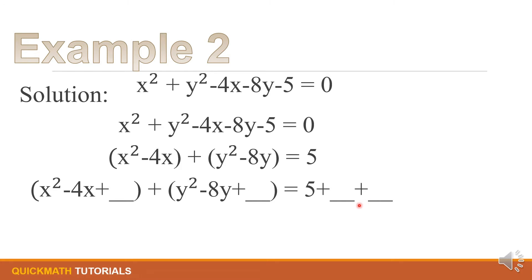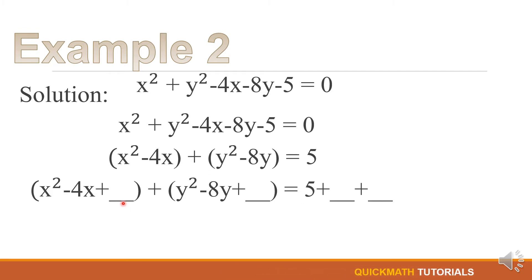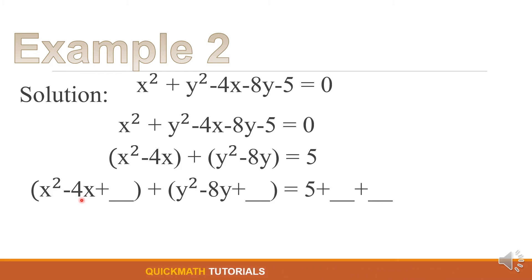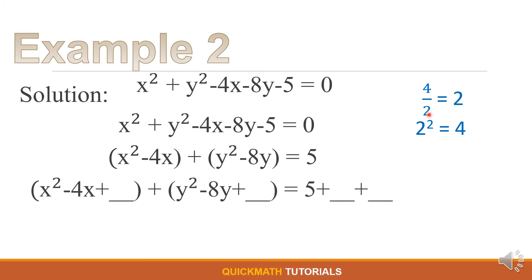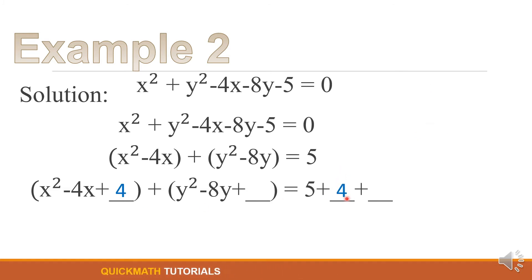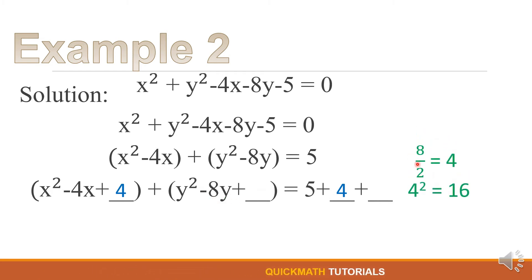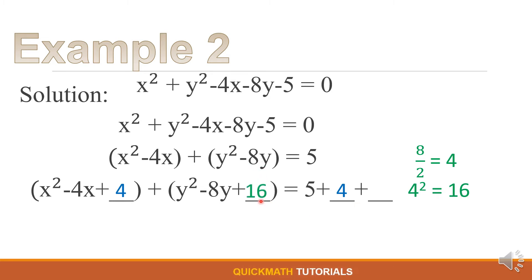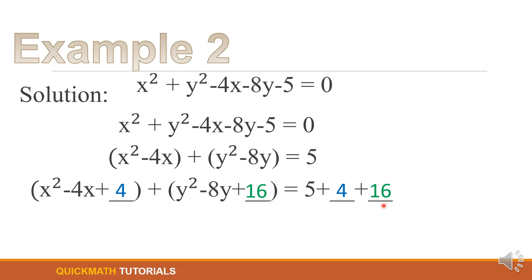This process is what we call completing the square. To find the third term of x, focus on the coefficient of the middle term regardless of the sign. The coefficient of x is 4, so 4 divided by 2 equals 2, and 2 squared equals 4. Therefore we will add 4 on the left and on the right side. For y, focus on the coefficient of the middle term: 8 divided by 2 equals 4, and 4 squared equals 16. So we will add 16 here and on the right side as well.